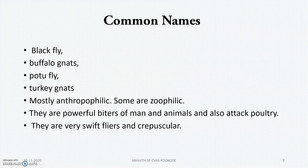This fly has got many common names: the black fly, buffalo gnats, potofly, turkey gnats, etc. Mostly they are anthropophilic and reside in the human area, and some are zoophilic. They are powerful biters of man and animals and also attack poultry, producing annoyance of the livestock. They are very swift flyers — they fly great distances and are mainly night active.